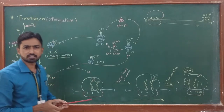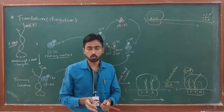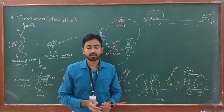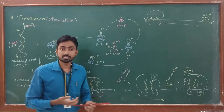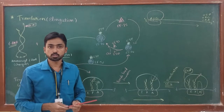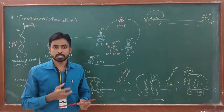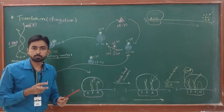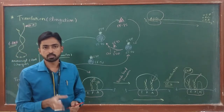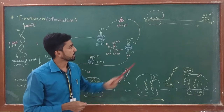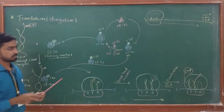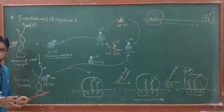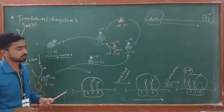Elongation comprises all the reactions from the formation of the first peptide bond through the formation of the last peptide bond. The rate of elongation is very slow compared to the rate of DNA replication or transcription. Replication takes place at the rate of 1,000 nucleotides per second by DNA polymerase, while translation takes place at the rate of 15 amino acids per second. In today's lecture, I am going to focus on the important events that occur during elongation in the prokaryotic cell.